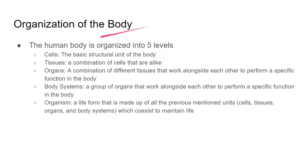Organization of the body: the human body is organized into five levels. You have cells, which are the basic structural unit of the body. Tissues, which are a combination of cells that are alike. Organs, which are a combination of different tissues that work alongside each other to perform a specific function. Body systems, which are a group of organs that work alongside each other to perform a specific function. And ultimately you have an organism, which is a life form made up of all the previously mentioned units, which coexist with each other to maintain life.